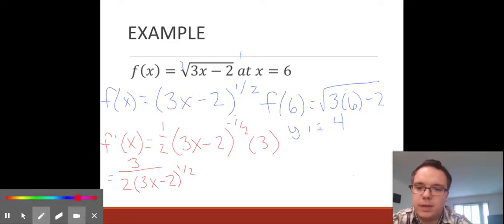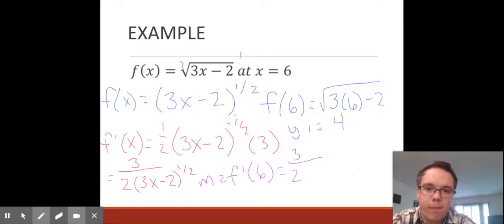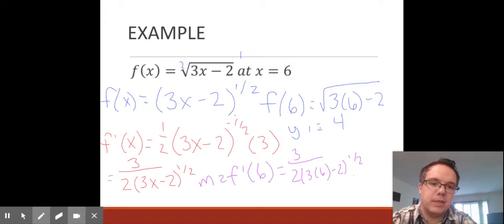To find our slope, we take our derivative and plug in 6. If we plug in 6, we get 3/2 times (3 times 6 minus 2) to the -1/2. That's 18 minus 2 again, which is 16. 16 to the -1/2 power is 1/4. 3/2 times 1/4 is 3/8.